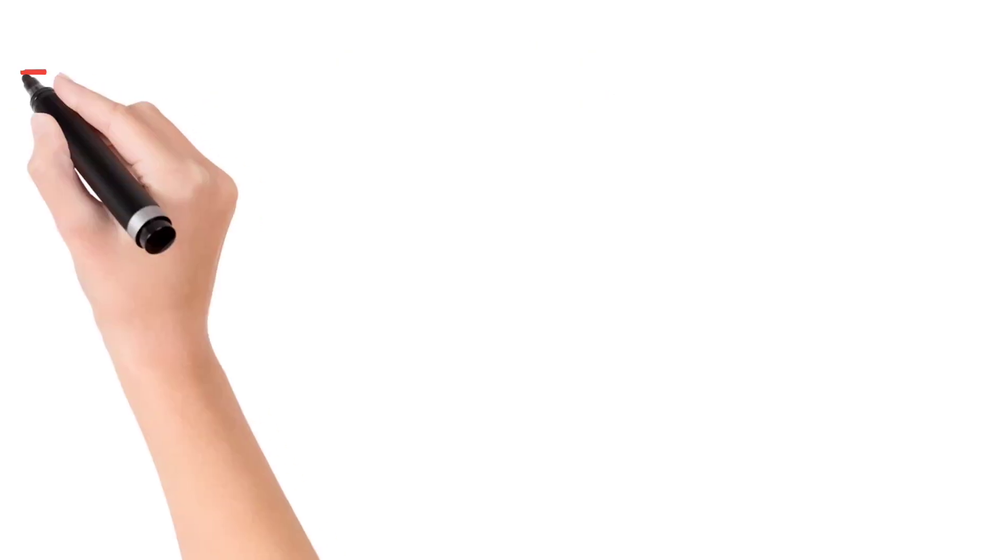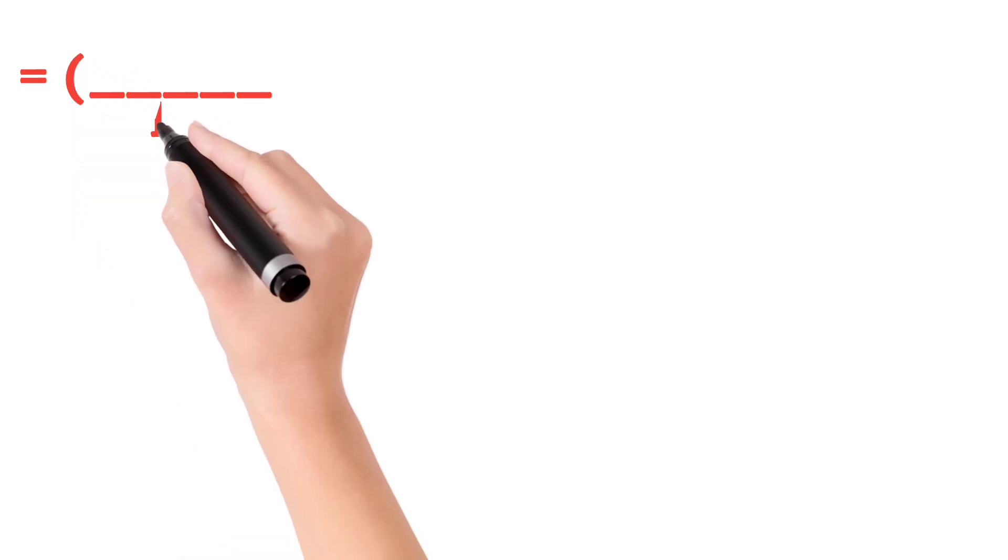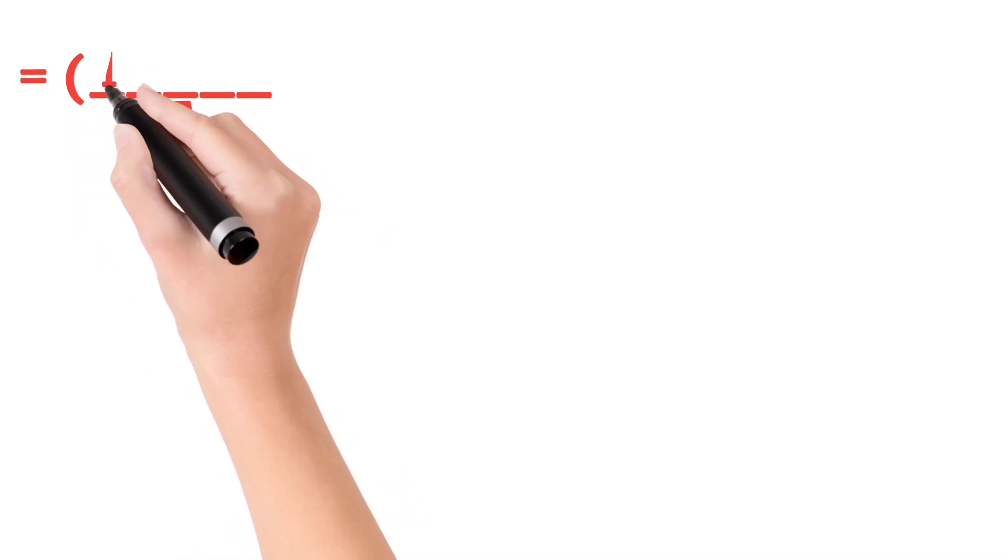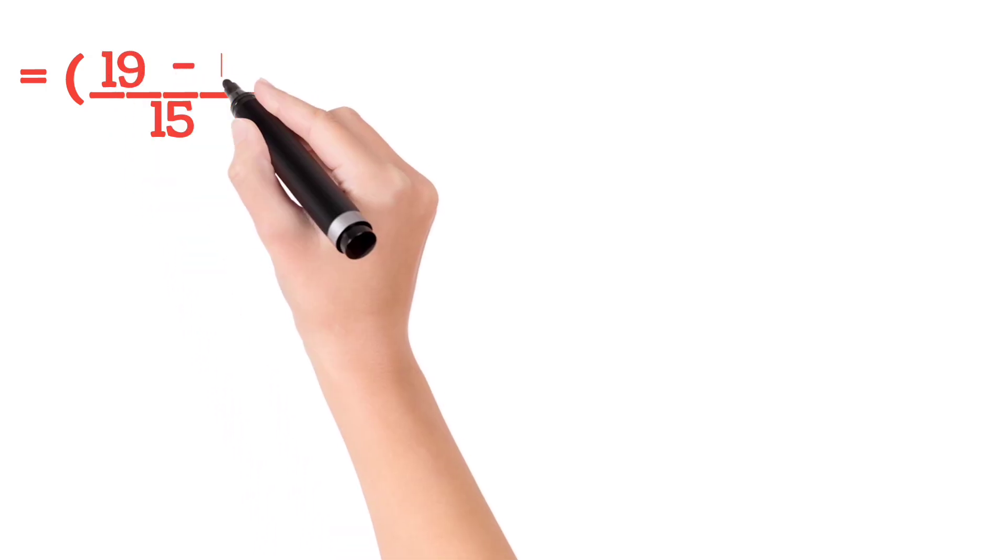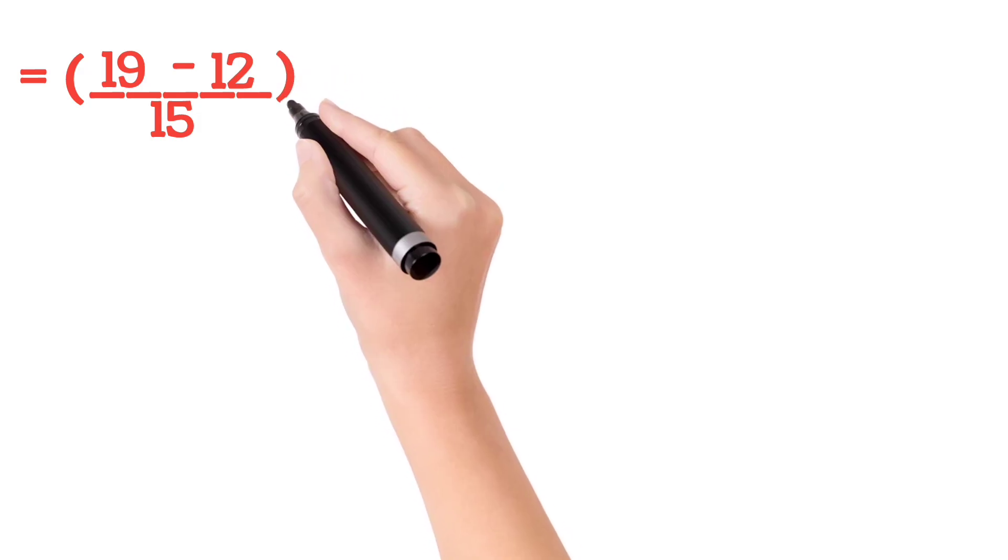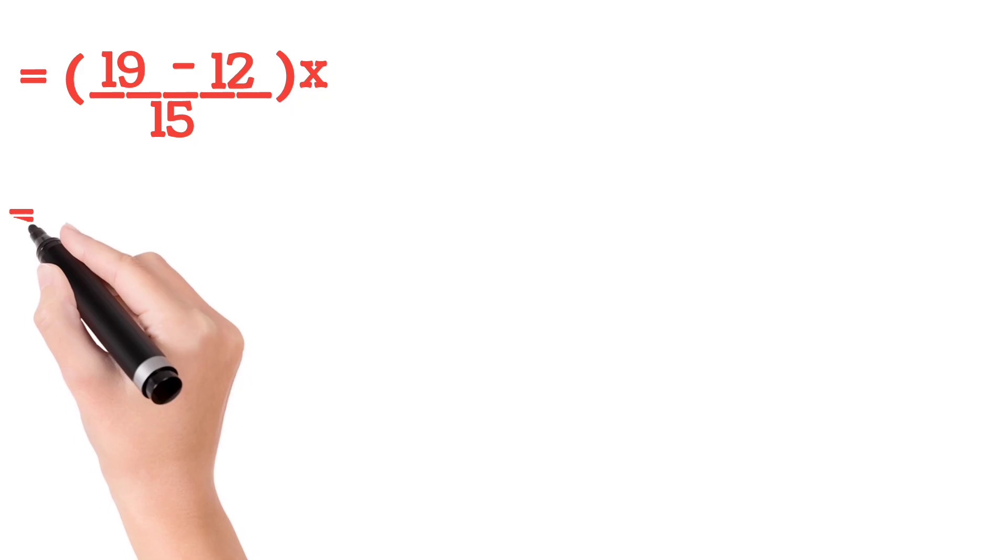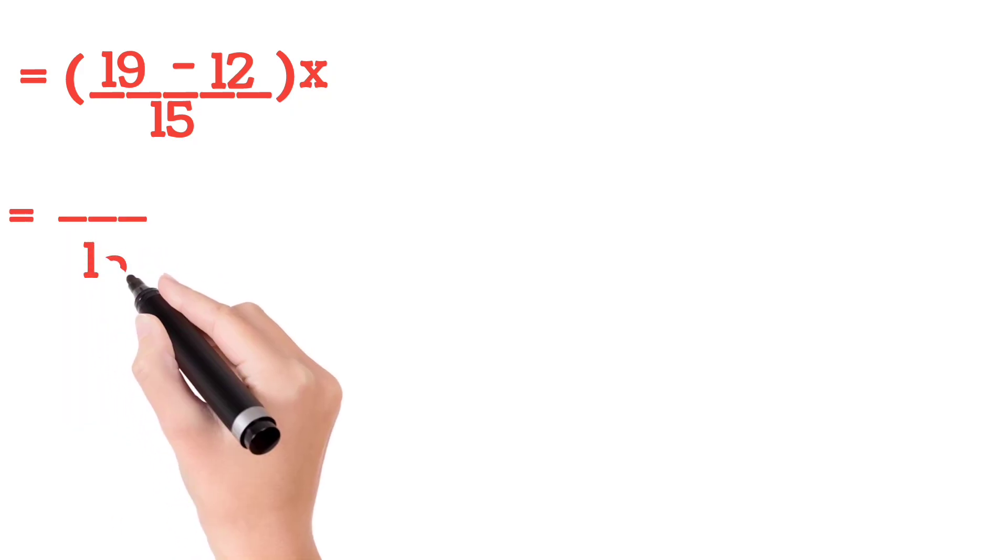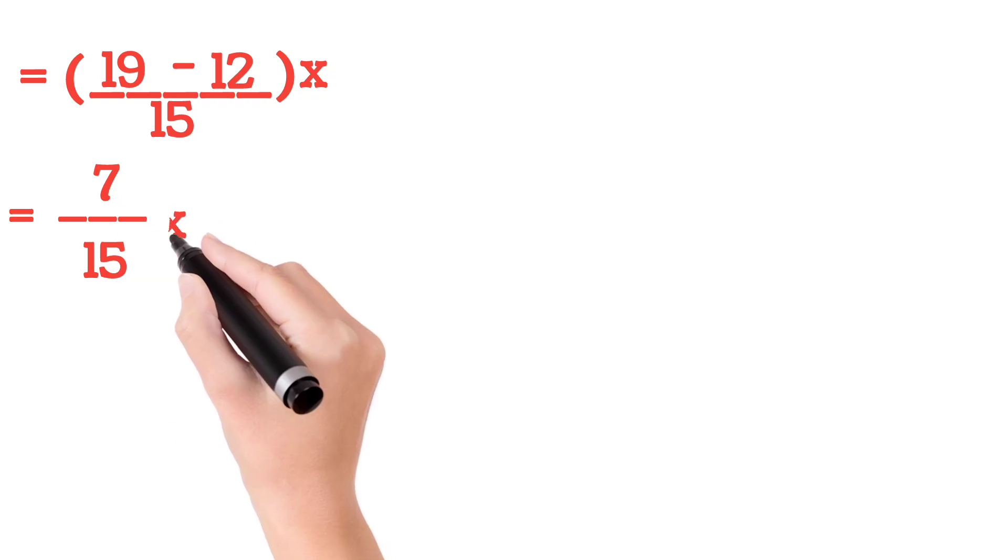Now next step. First you write 15, and next you will get 19 minus 12, bracket close, then X. Don't forget to write X here, otherwise everything will be wrong. Now denominator is 15, 19 minus 12 is 7. So 7/15X is our answer.